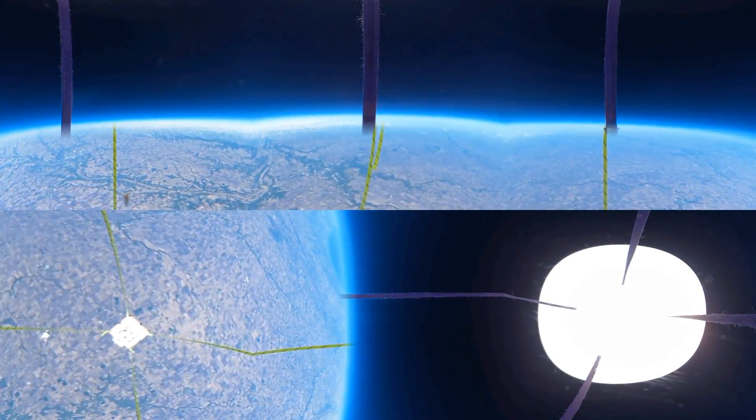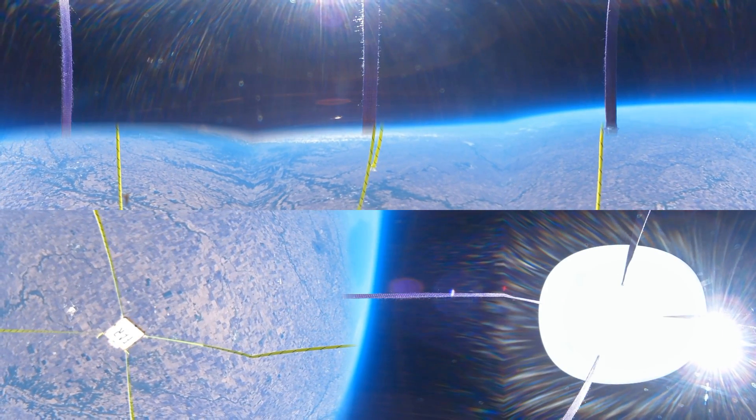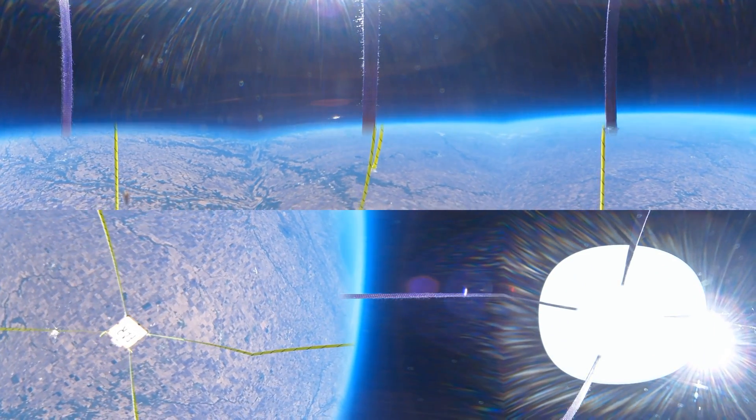On August 21st, 2017, a total eclipse of the sun will be visible across the US from Oregon to South Carolina. Far Horizons will fly to the stratosphere to view this once-in-a-century event.